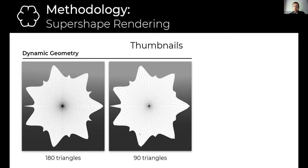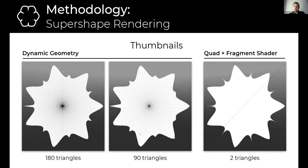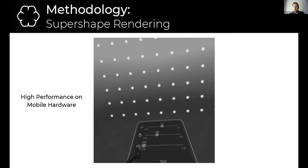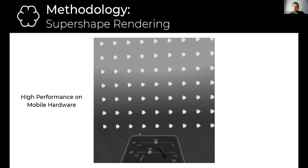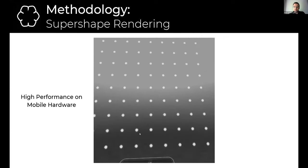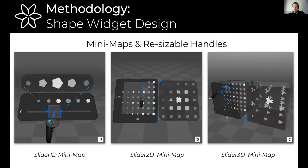That allowed us high performance rates to render dozens of super shapes in real time on a standalone headset. We also considered something similar to worlds in miniature, which we called mini maps and resizable handles that work as lenses, since they display regularly spaced samples of the super shapes in the vicinity of the handle position. Here's a short video of our prototype in action. For the 1D case, there's a slider with resizable handles. You also see thumbnails and the mini maps that assist the selection process.